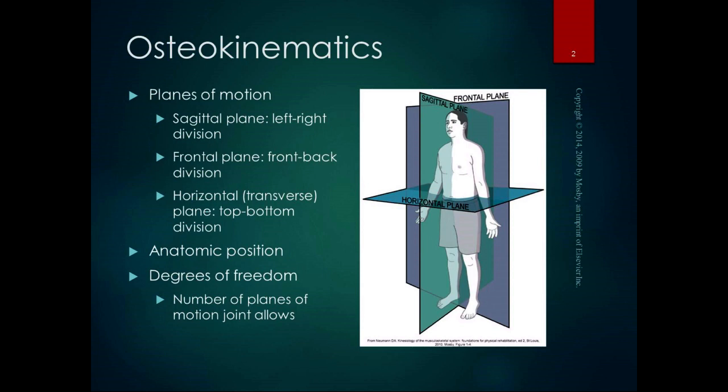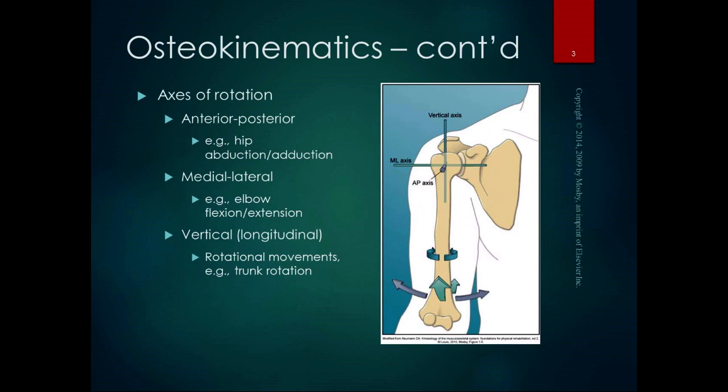The center of gravity is the point at which our weight is fairly equal on all sides — about an inch below the navel, or at the level of the second sacral segment. We'll talk about that with regard to stability and balance in lab. Degrees of freedom refers to the number of planes of motion a joint allows. Some joints have one degree of freedom, like the elbow, while others move in two or three planes.